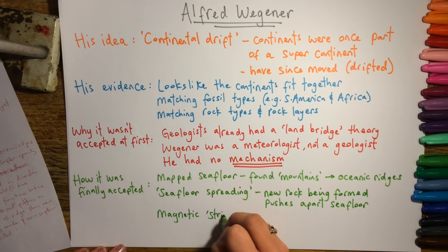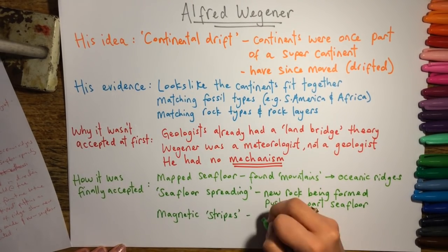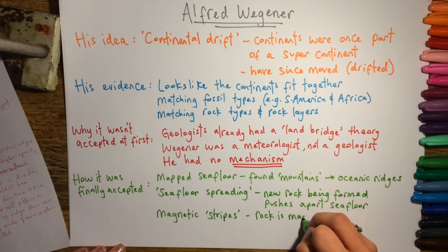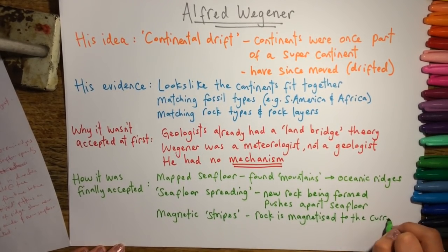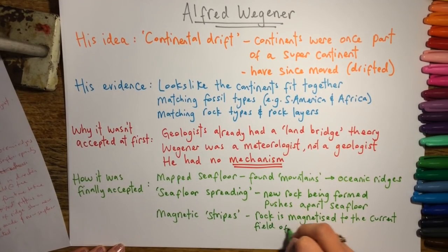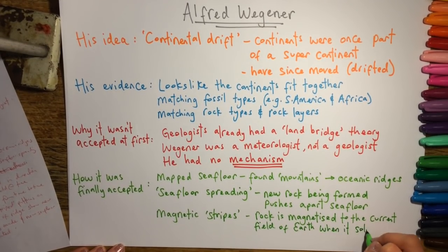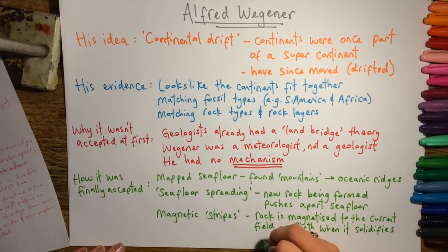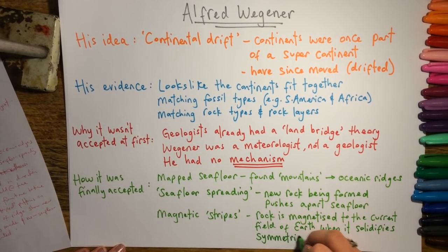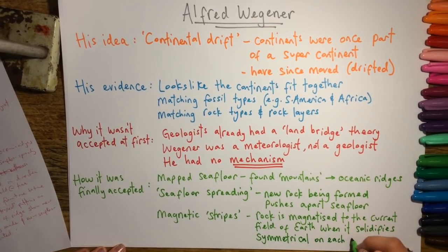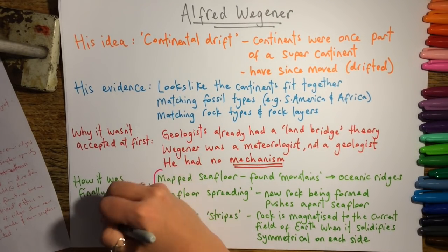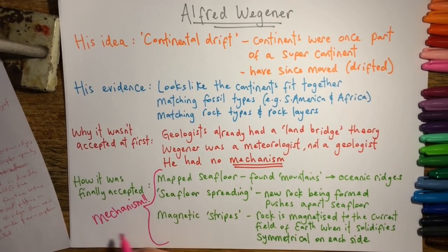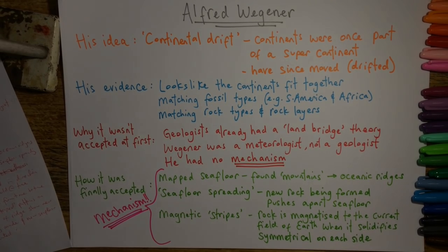Some of the evidence for this was the fact that there were magnetic stripes of rock — rock that was magnetised in different directions on either side of the ridges. That's because rock is magnetised in the direction of the earth's magnetic field at the time, and the earth's magnetic field changes from time to time. Because the stripes were symmetrical on each side, it suggested the sea floor was being pushed apart from the middle. This provided the all-important mechanism that meant the theory was finally accepted.